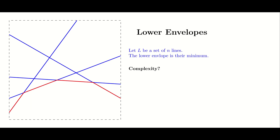It is easy to see that the complexity is linear. By complexity, we mean the number of edges contained in the minimum. In the picture, there are four lines and four edges along the lower envelope, displayed in red. In general, there are at most n edges in the lower envelope of n lines, because every line can appear at most once — as soon as a line disappears, it can no longer come back and appear as a lower envelope edge later on.